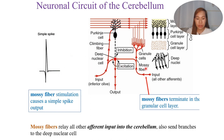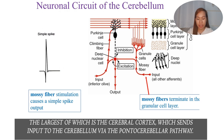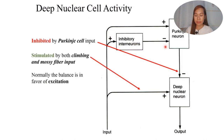Mossy fibers terminate in the granular cell layer and produce a simple spike output. They relay all other afferent input into the cerebellum and send branches to the deep nuclear cells. Mossy fibers are one of the major inputs to the cerebellum, with the largest source being the cerebral cortex. The cerebral cortex sends the majority of its inputs via the mossy fibers through the corticopontocerebellar pathway, terminating in the granule cells of the granular cell layer.